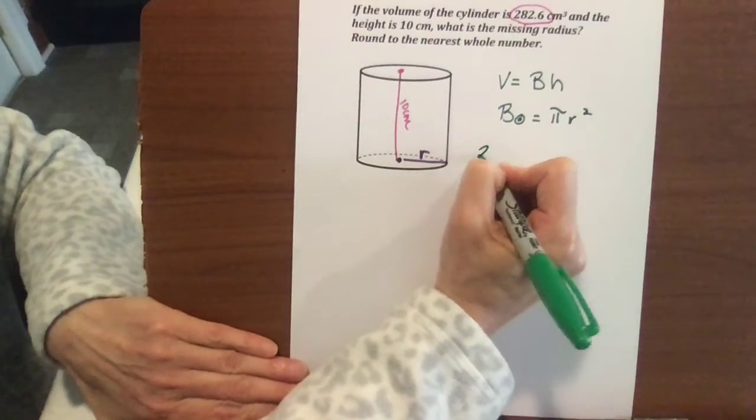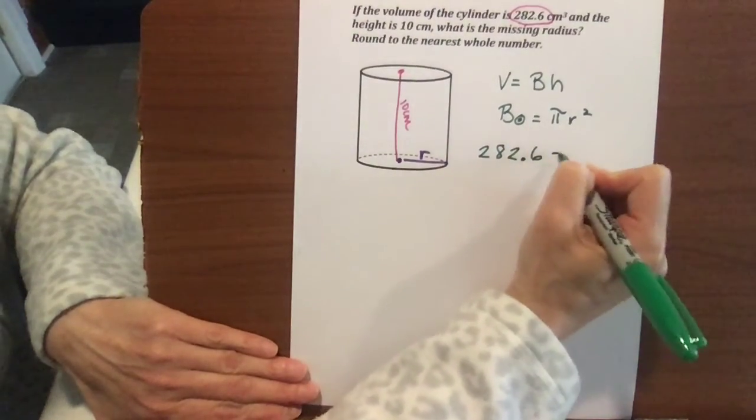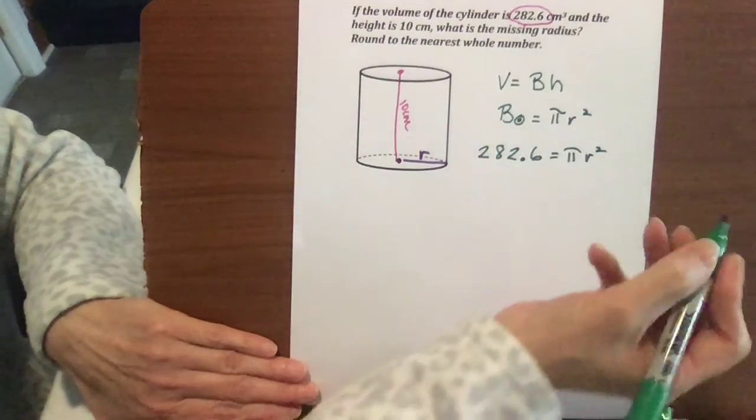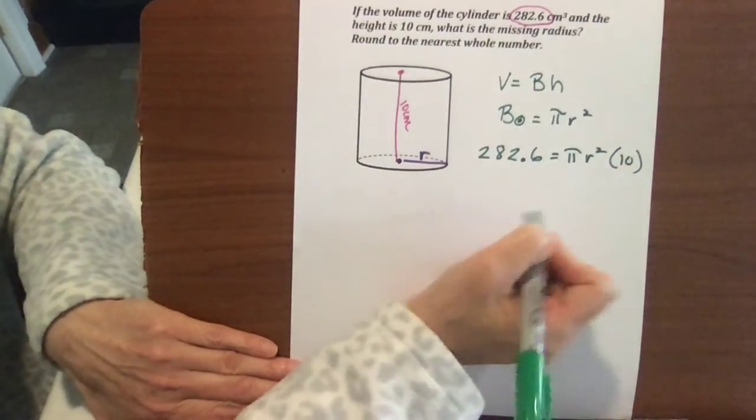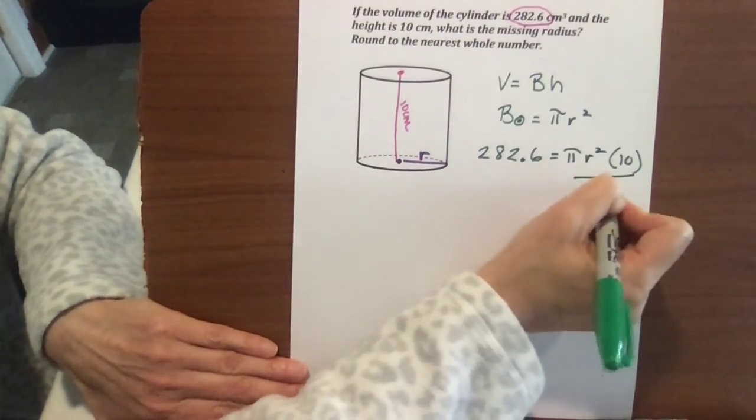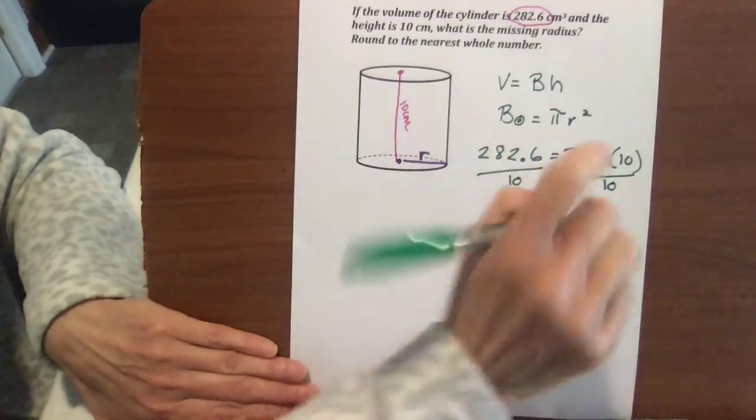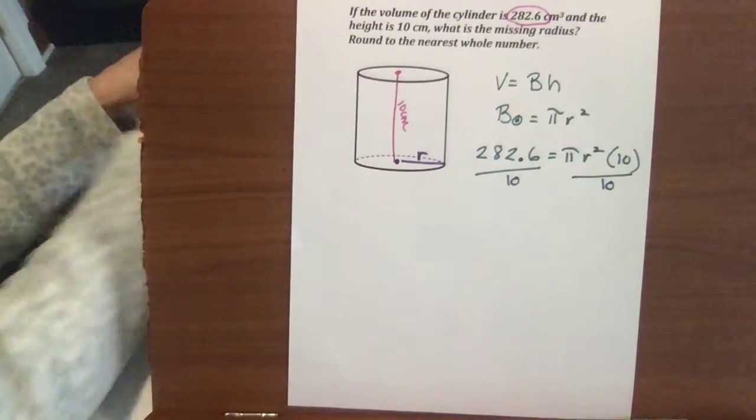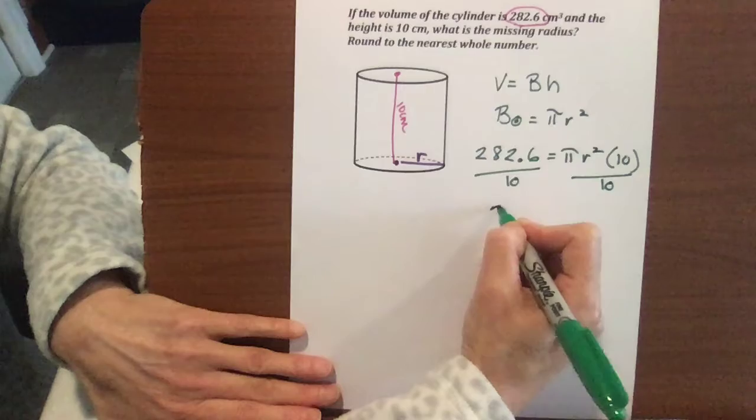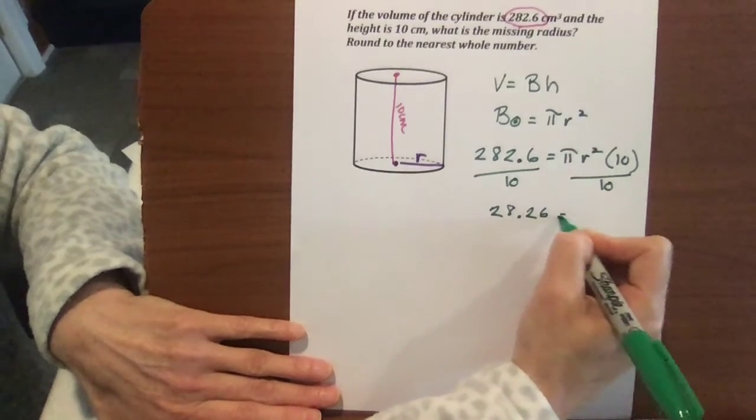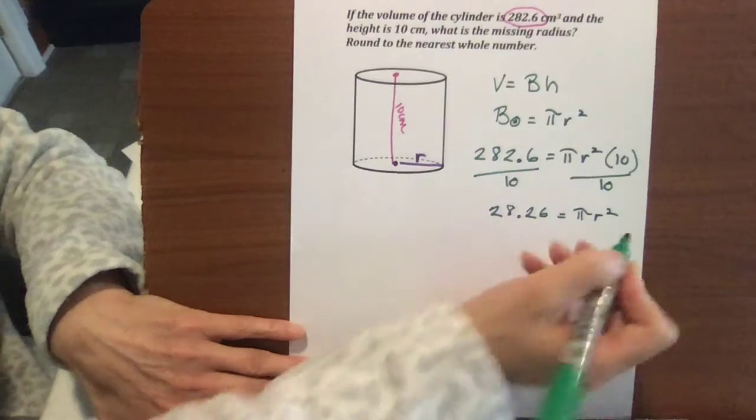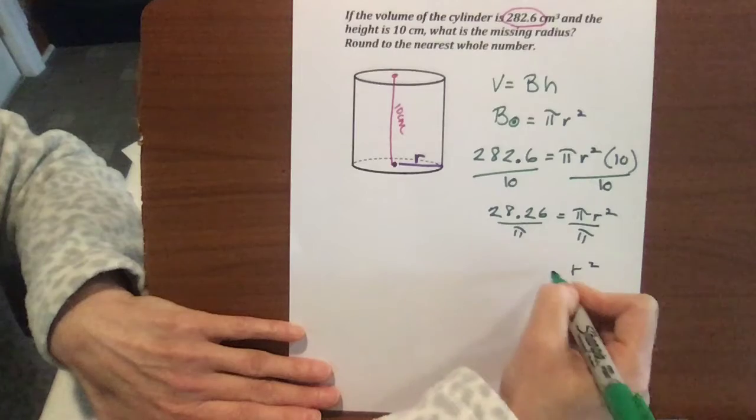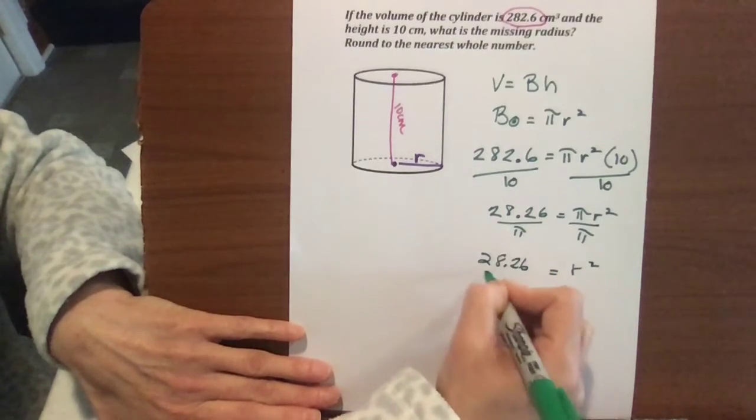Our height is 10, so now we're going to take our volume of 282.6. It's going to equal our base area of pi r squared. Again, we don't know r, that's why we leave it that way, times 10. So now we're going to divide by 10 to start solving. We need to isolate r squared so that we can get r alone. That's our variable. And when we divide by 10, we're going to get 28.26, and that equals pi r squared.